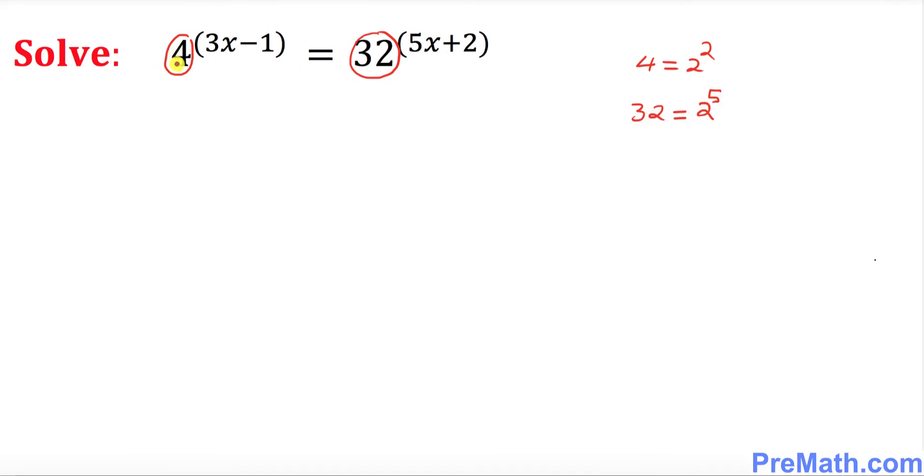So I can write 4 as 2 to the power of 2, and then keep the exponent 3x minus 1.